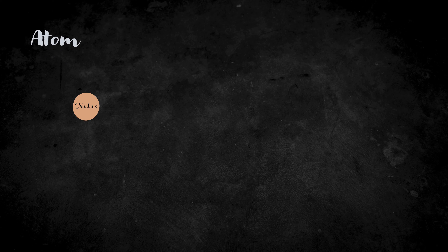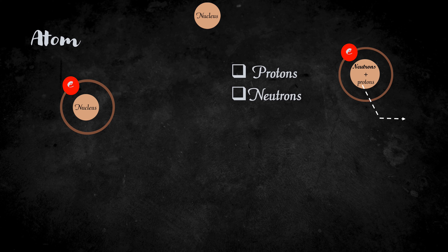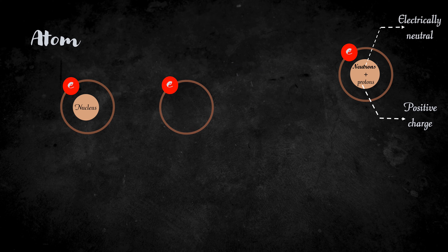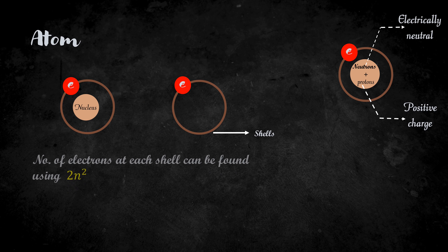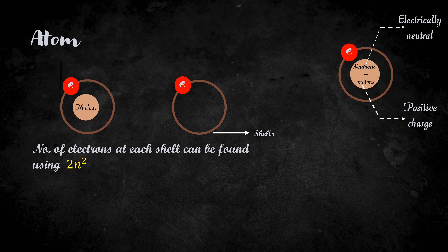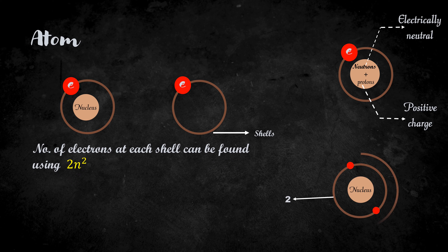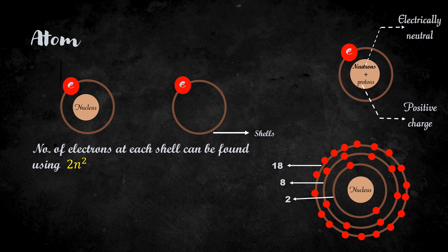Let's start with the basic unit: atom. Every atom is composed of a nucleus and one or more electrons bound to the nucleus. This nucleus is made of protons and neutrons. The protons have positive electric charge. The neutrons have no electric charge — that means it is electrically neutral. The electrons revolve around the nucleus in a path called shells. The number of electrons at each shell can be found using 2n². So the first shell can occupy 2 electrons, the second shell 8 electrons, and the third shell 18 electrons and so on. These electrons are negatively charged.